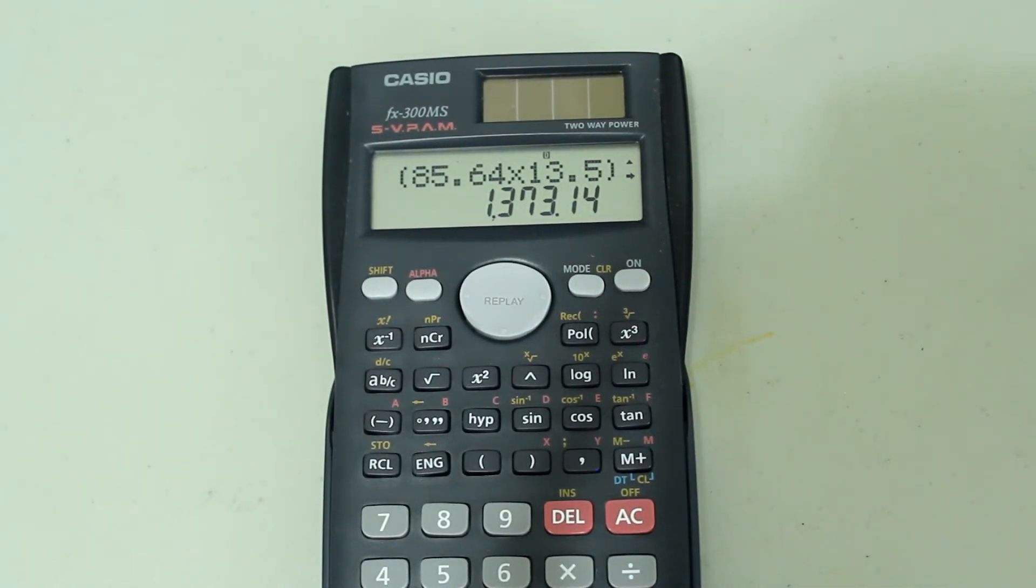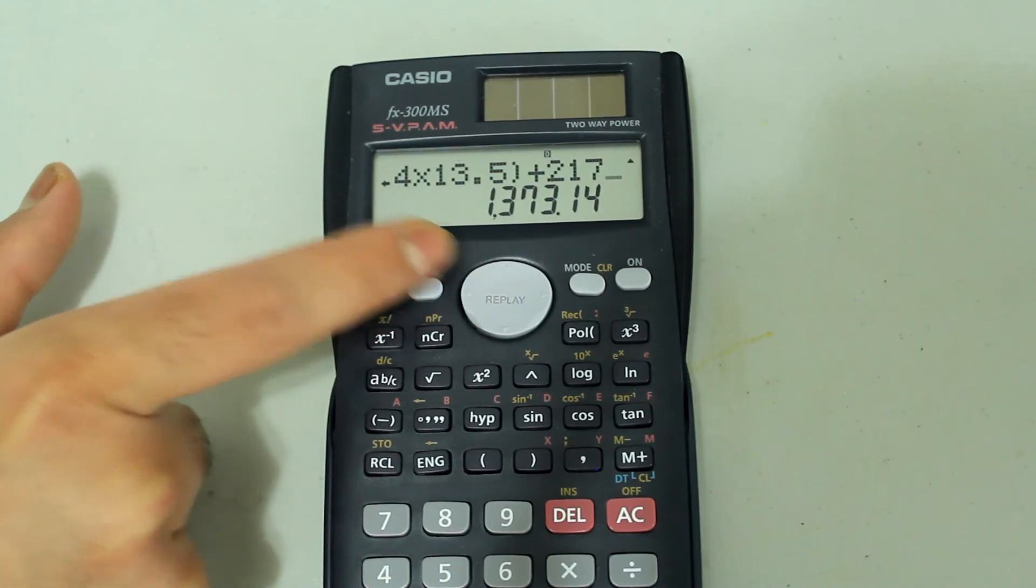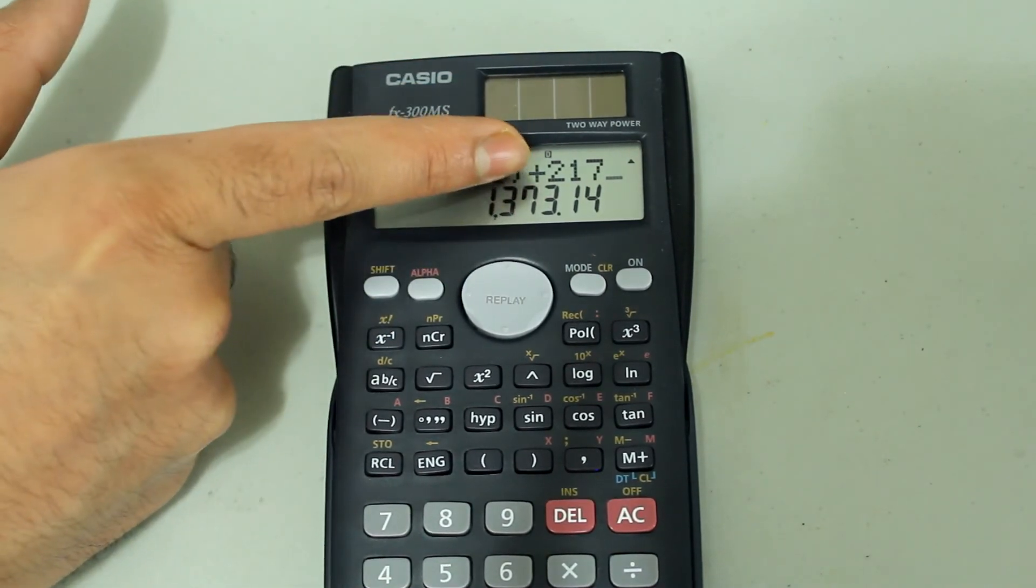Likewise, let's say you want to delete a number from your entry. For example, you want to make the 217 just 27. Press the left arrow again, and the number we wish to delete in this case is the 1.